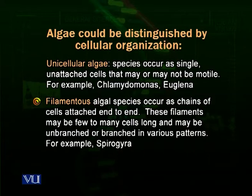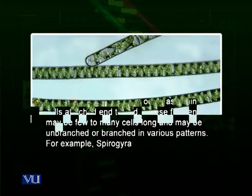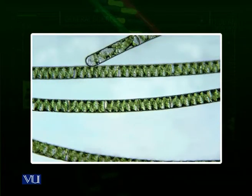Then comes the filamentous algae. Filamentous algae are multicellular algae which form long filaments, which are mostly septated — they have septa. Here in the diagram you can see a filamentous algae called Spirogyra, a very common algae found in ponds near Lahore, in Pakistan, and in many areas of the world. Under the microscope, filamentous algae appear as long, thin filaments.